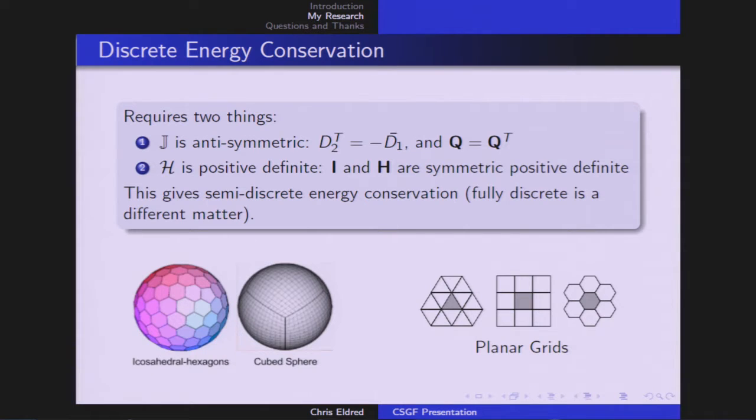The next thing to think about is discrete energy conservation. Going back to the continuous system, we just require two things in order to get energy conservation. We're going to require that J is antisymmetric, which just means that discrete divergence and the discrete gradient are adjoints of each other, and that the nonlinear Coriolis operator is self-adjoint. We're also going to require that our Hamiltonian H is positive definite, which means that our discrete Hodge-Stars I and H have to be symmetric, positive definite. These two things alone are enough to give discrete energy conservation. What's nice about this is that it works on any grid that you can think of for a wide variety of schemes. So it'll work on the various planar grids that I've shown here. It'll work on a cube sphere. It'll work on an icosahedral grid. As long as we can find I and H such that H is positive definite and Q such that it's self-adjoint, we have discrete energy conservation.